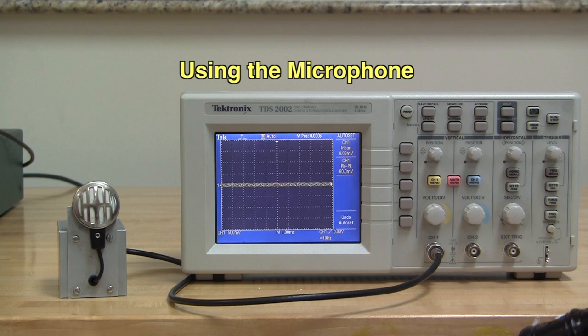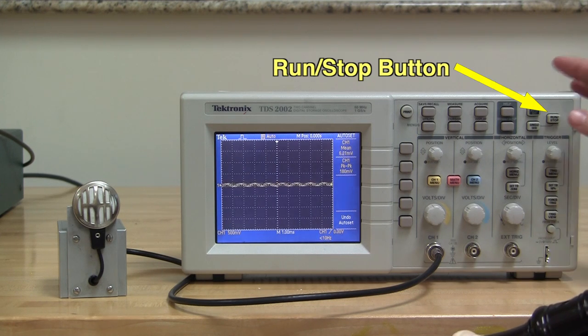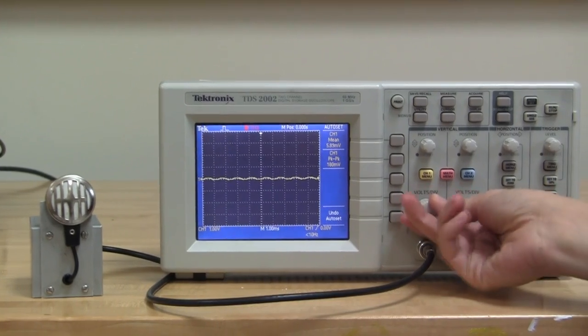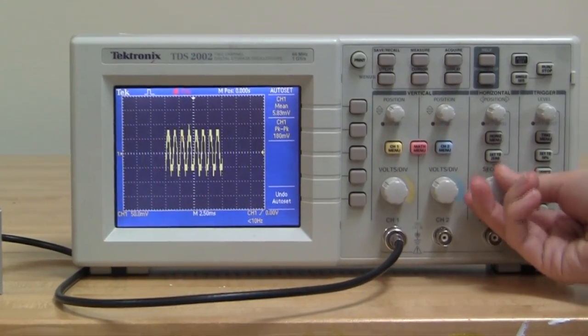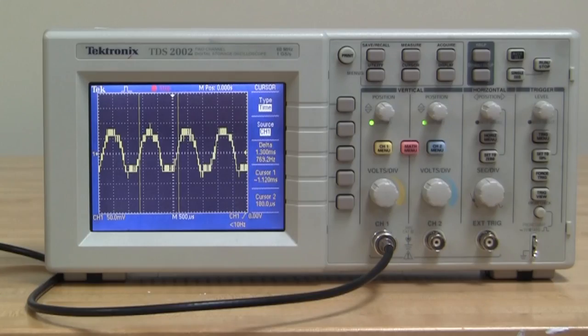You can also use a microphone to look at sounds on the oscilloscope. While playing a note on a recorder, I press the run-stop button to freeze the graph. I can then use the cursors to determine the frequency of the note. This note has a frequency of around 769 Hz.